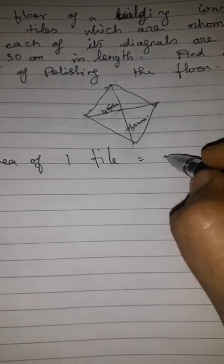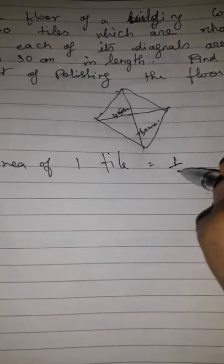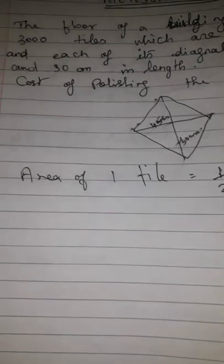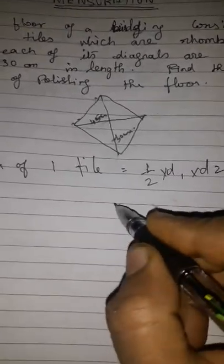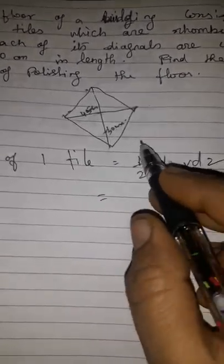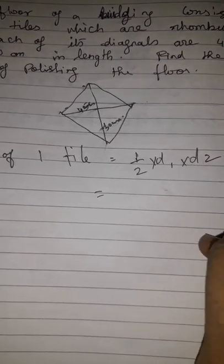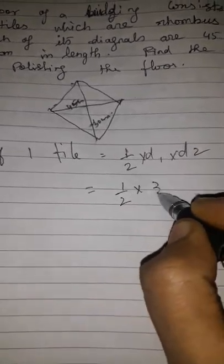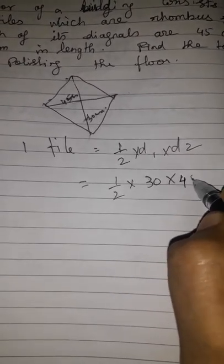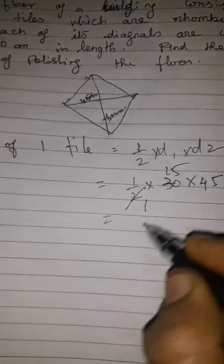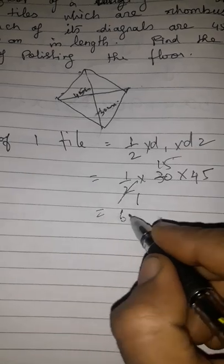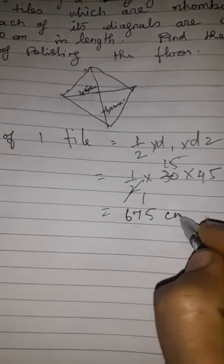Area of one tile equals one-half into D1 into D2. The area of a rhombus formula is one-half into D1 into D2. So that is one-half into 45 into 30. That gives us 675 centimetre squared. So the area of one tile is 675 cm².